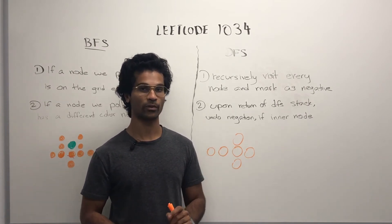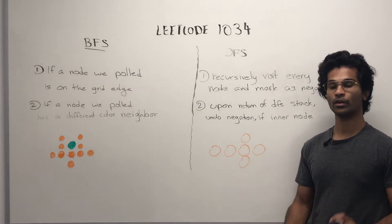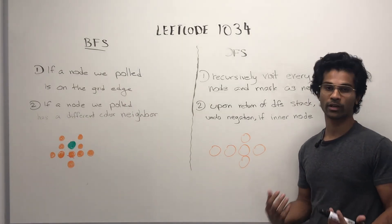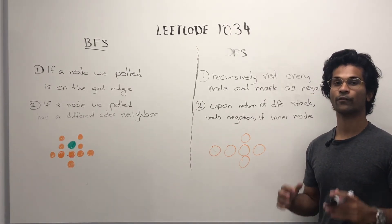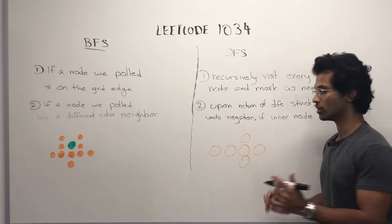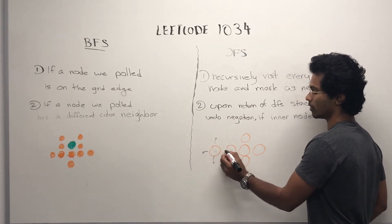Let's do a quick dry run with this connected component. Let's say our target node was here. We're going to begin visiting all the nodes in our connected component. So, we negate this, and we visit up, down, left, and right for recursive stack control to visit all the nodes. So, we go up, down, left, and right.